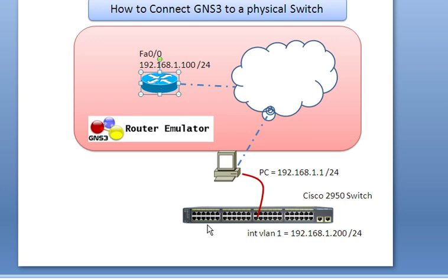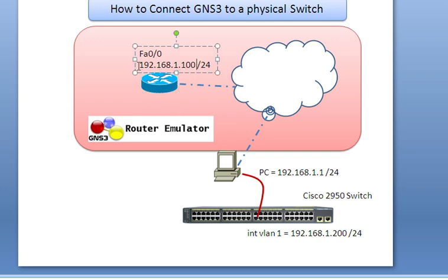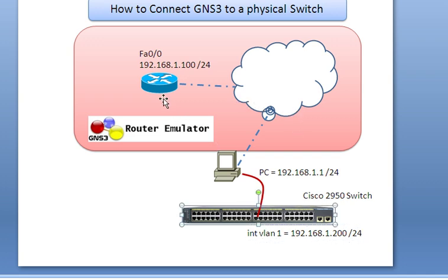In this example I've got a 2950 series switch, I've got my laptop, I've got a cloud which we are going to configure to allow this to work, and I have a logical router inside GNS3. We're going to connect them all together on the same physical subnet: 192.168.1.100, 192.168.1.1, and 192.168.1.200. Once I've configured this I should be able to ping from this switch to that router, and that router is a piece of software, not hardware.